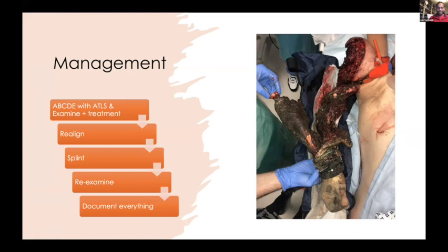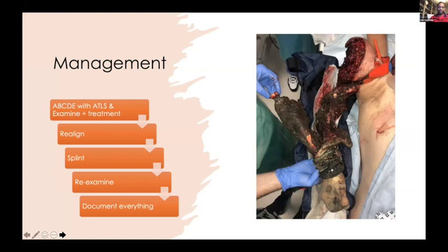Mangled extremities are variable in severity but the principles stay the same: ABCD approach and ATLS principles, thorough examination, early treatment, pain relief, realignment of the fracture — especially if there's a vascular injury, as realignment usually helps restore vascular patency — splinting the fracture with a plaster or backslab, then re-examine and document everything. Your SHO and registrar are the most important people at that point; as a consultant I trust them to do things by the book and document everything.